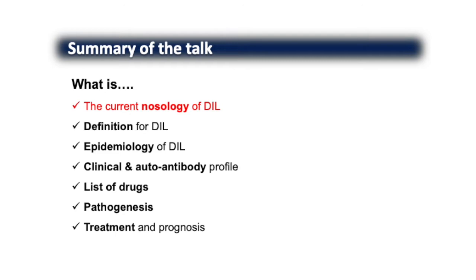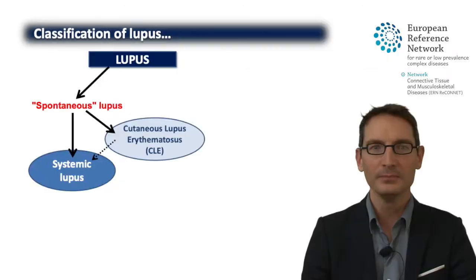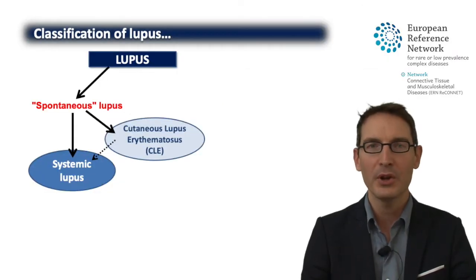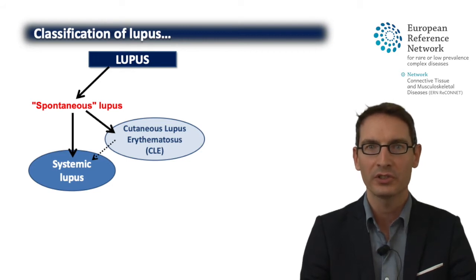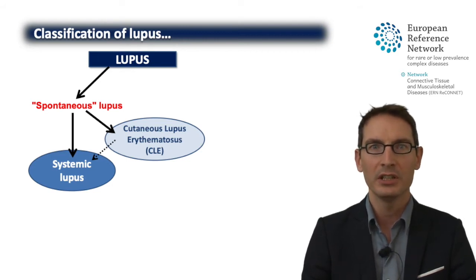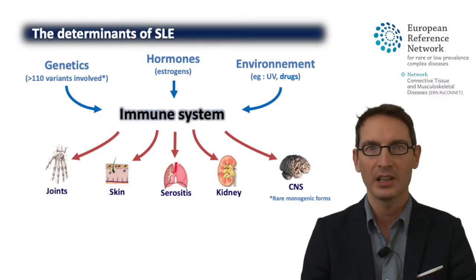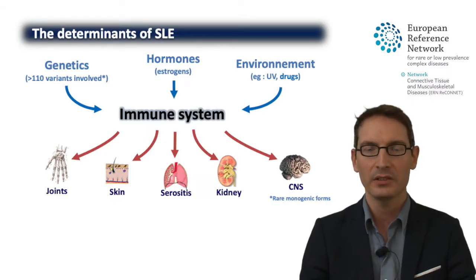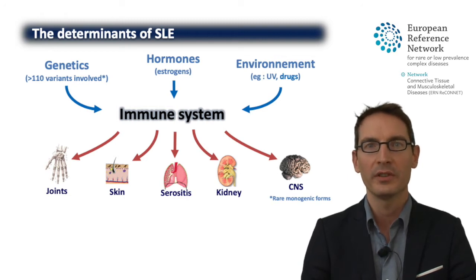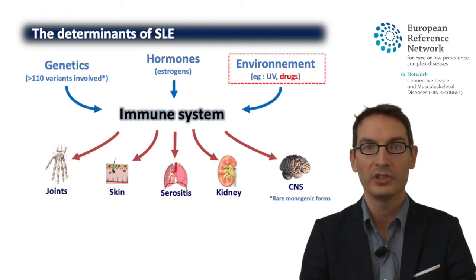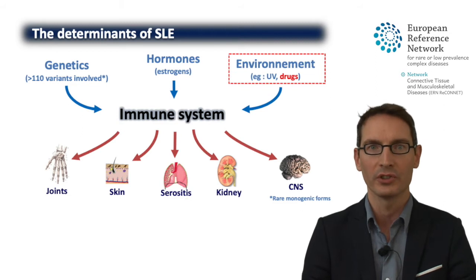Let's start by the nosology of DEAL. Most cases of systemic lupus are actually spontaneous cases. They can be cutaneous lupus or systemic lupus, but they appear spontaneously. We know that the pathogenesis is actually very complex and involves a combination of genetic factors, hormones, and also the environment, which includes UV, but also some drugs.